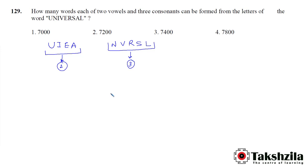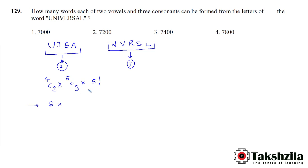In how many ways can we choose 2 vowels from 4? That is 4C2. In how many ways can we choose 3 consonants from 5 consonants? That is 5C3. Now we have 5 alphabets and we can arrange them in 5 factorial ways. So 4C2 is 4×3 divided by 2, which is 6. 5C3 equals 5C2, which is 5×4 divided by 2, giving 10. 5 factorial is 120.